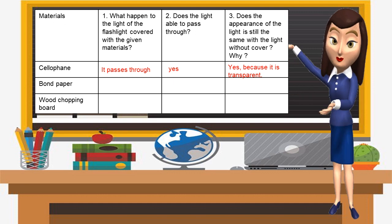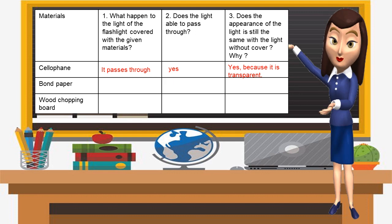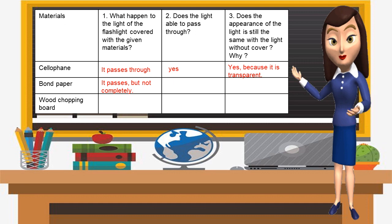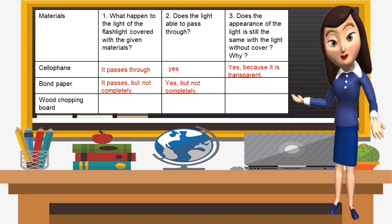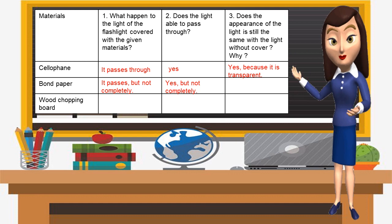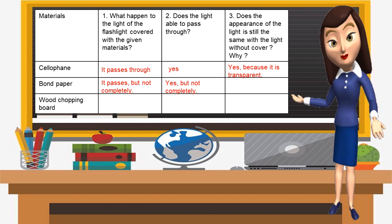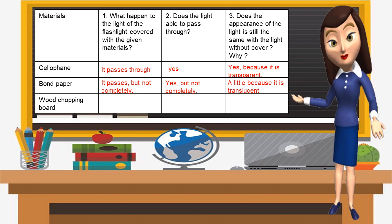Now let's go to bond paper. Based on your observation, what happened to the light of the flashlight covered with bond paper? It passes, but not completely. Does the light able to pass through? Yes, but not completely. Does the appearance of the light look the same? A little, because it is translucent. So the bond paper is translucent.